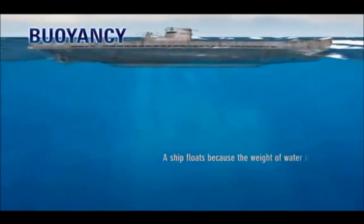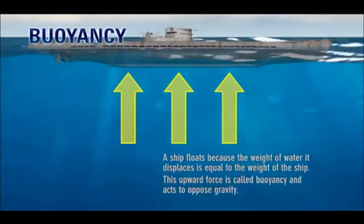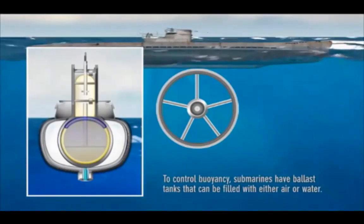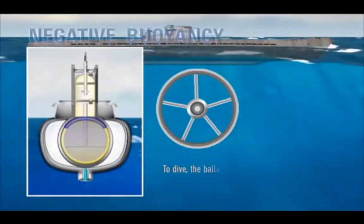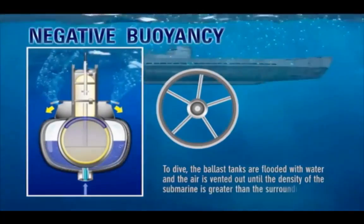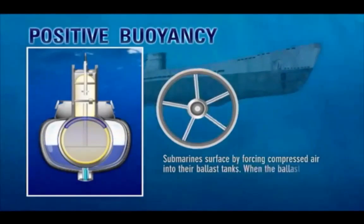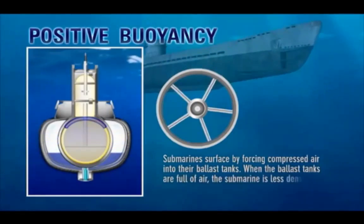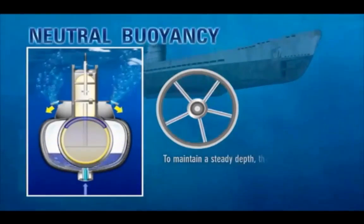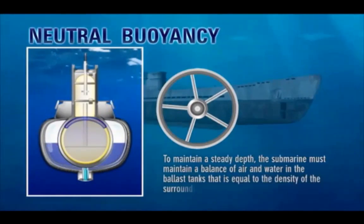A ship floats because the weight of water it displaces is equal to the weight of the ship. This upward force is called buoyancy and acts to oppose gravity. To control buoyancy, submarines have ballast tanks that can be filled with either air or water. To dive, the ballast tanks are flooded with water and air is vented out until the density of the submarine is greater than the surrounding water. Submarines surface by forcing compressed air into their ballast tanks — when full of air, the submarine is less dense than the surrounding water and rises to the surface.